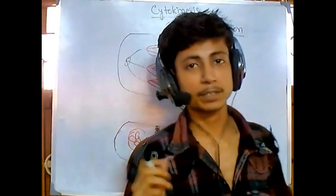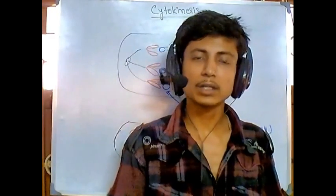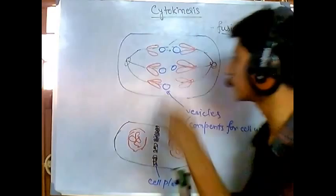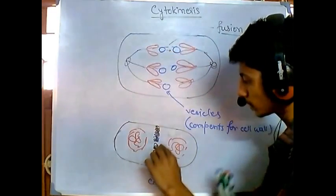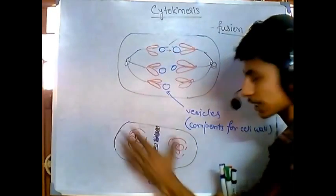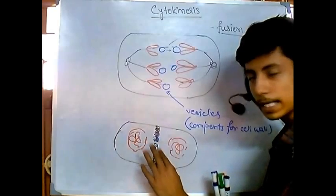During this fusion, somewhere the fusion is proper, somewhere the fusion is not that proper. Due to this uncontrolled fusion, due to improper fusion of this vesicle at the middle, they form some gap in between this cell.